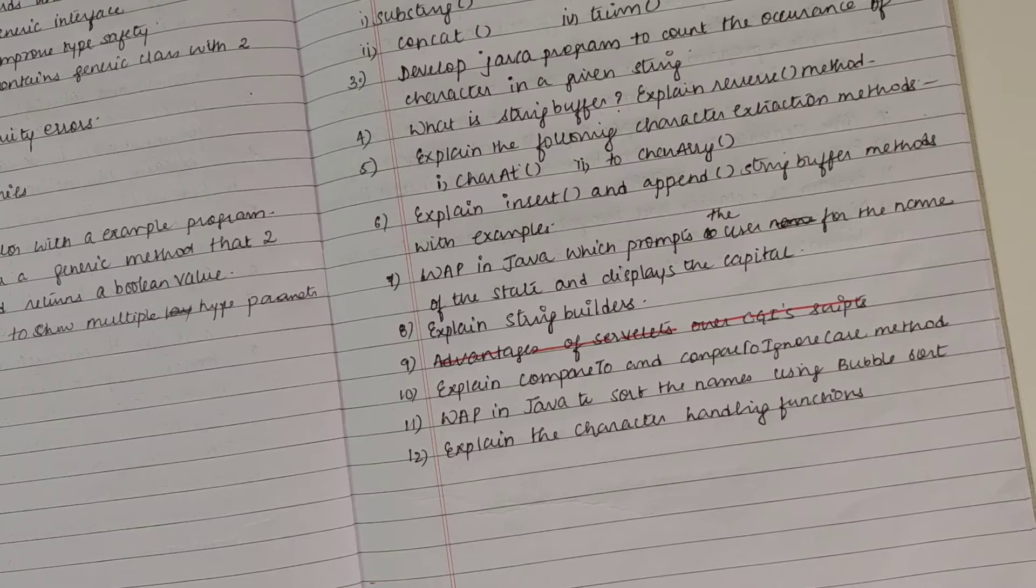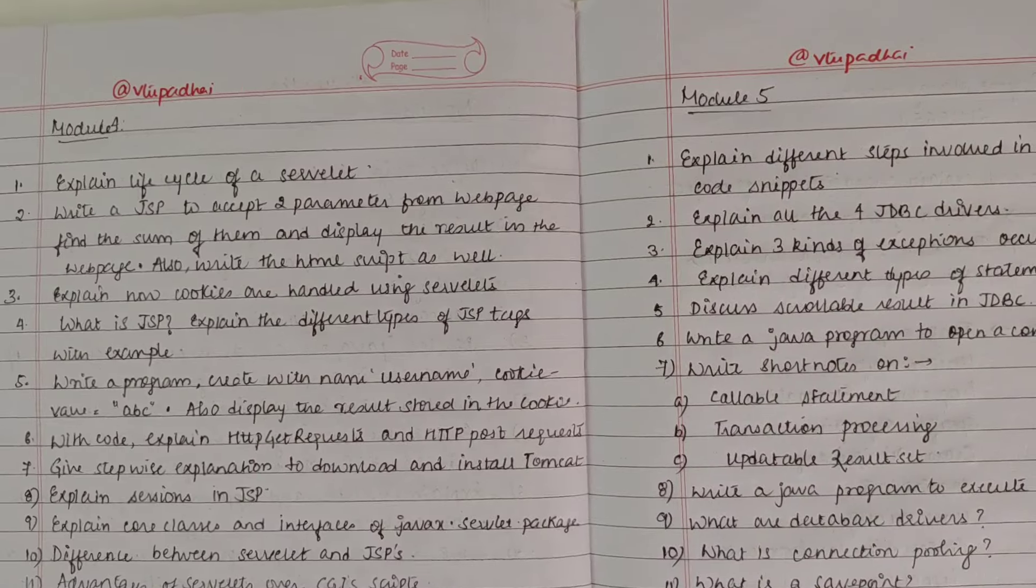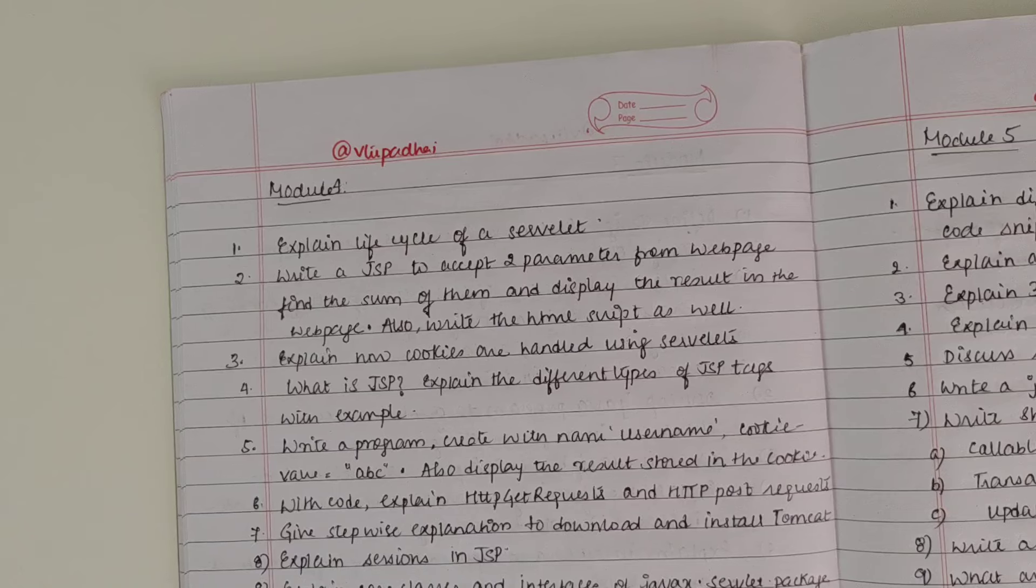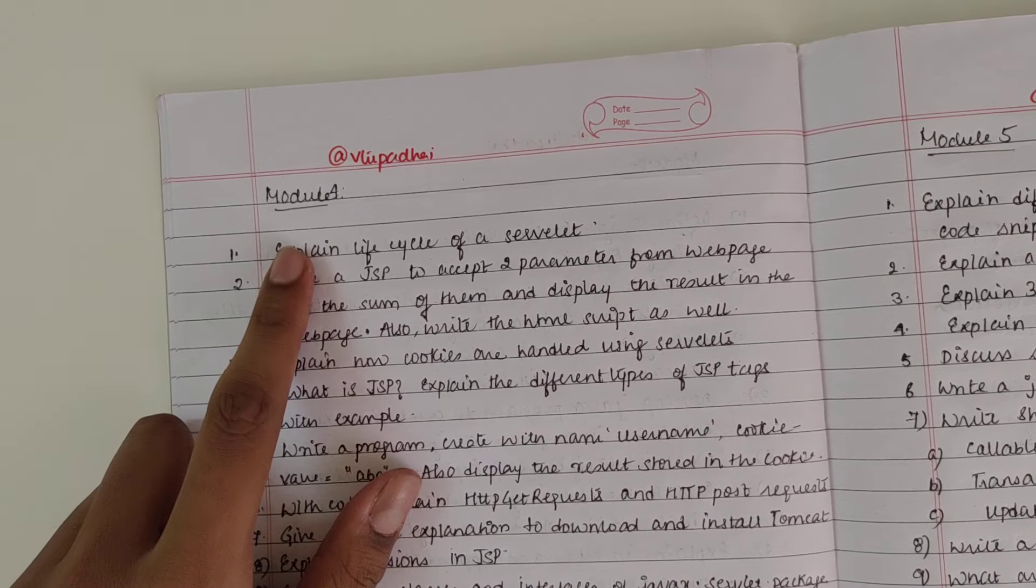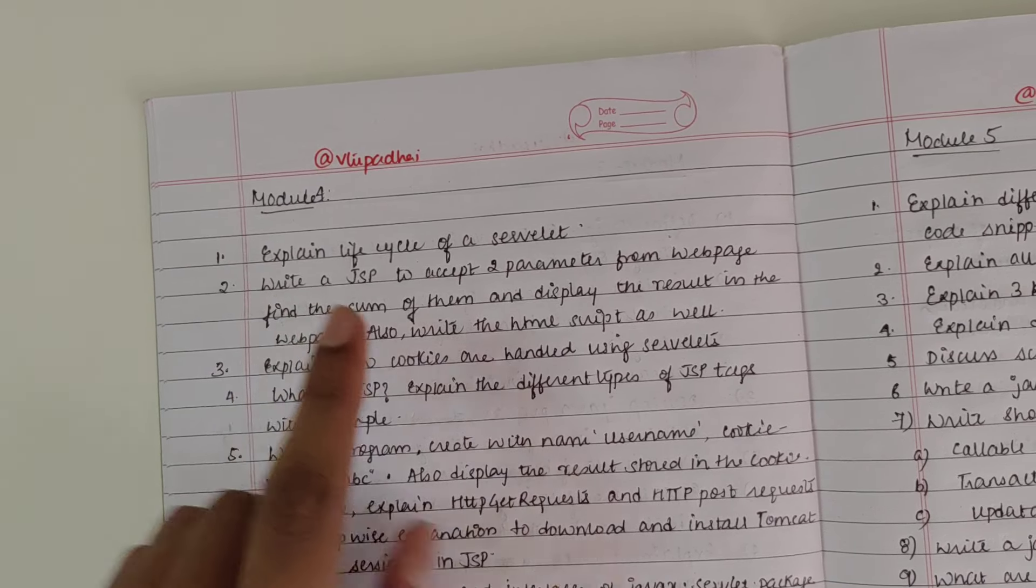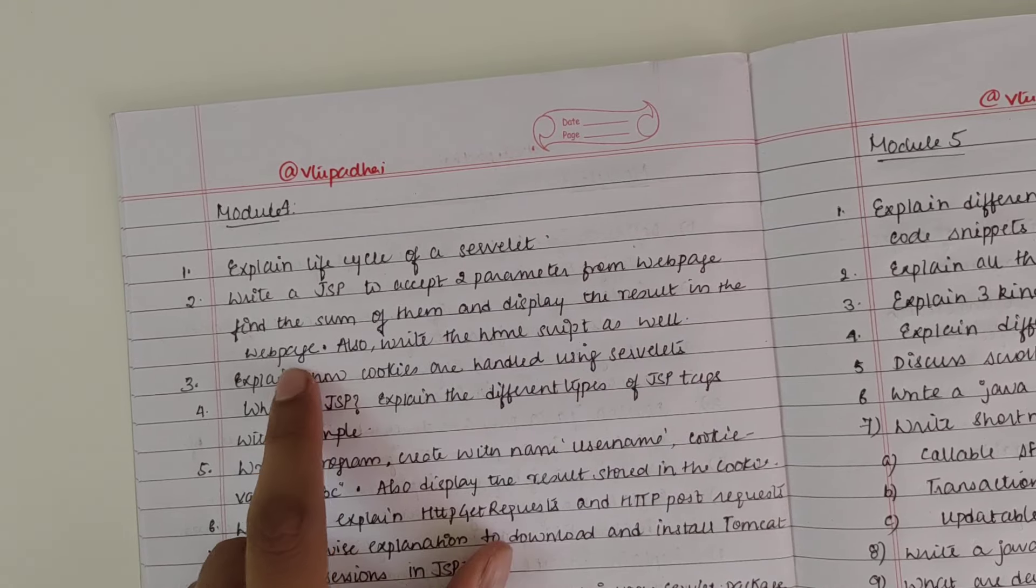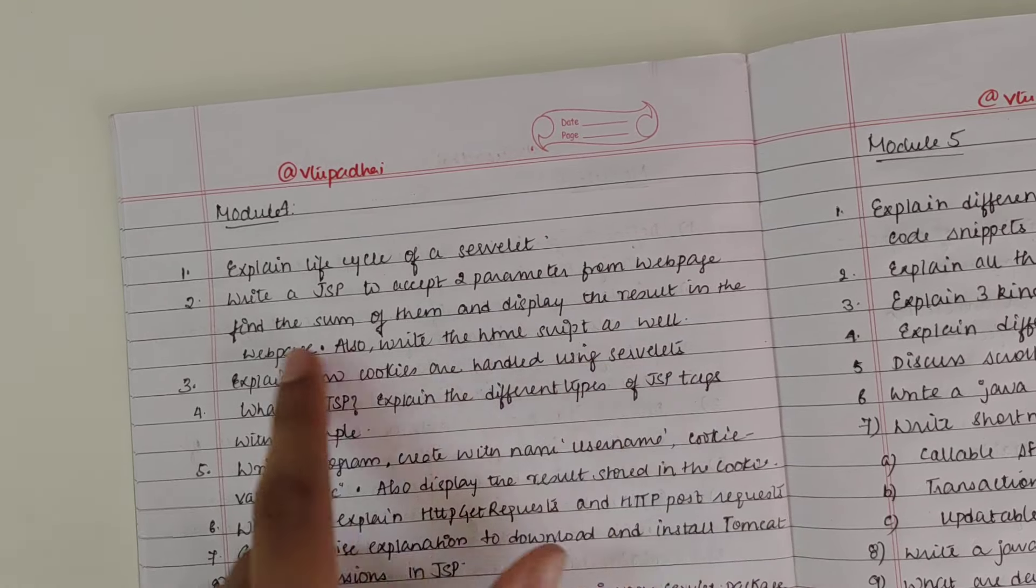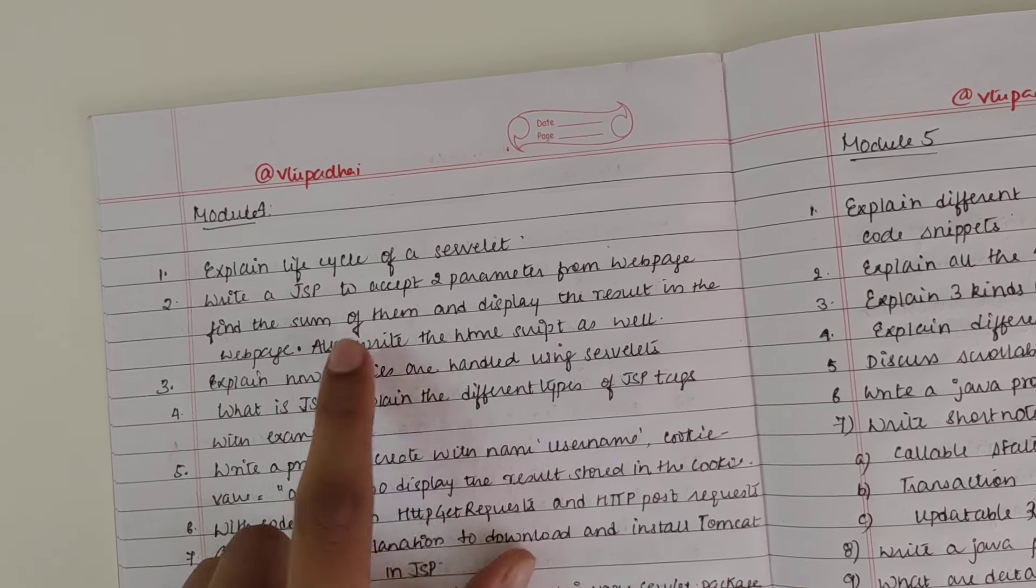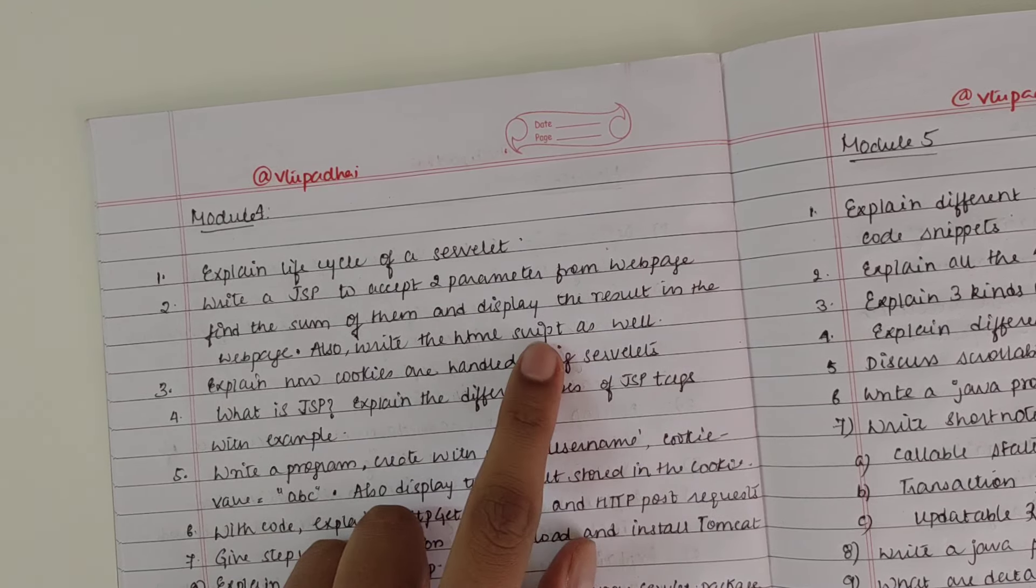Next module is Module 4, which is Servlets. First question: explain life cycle of the servlet. Write a JSP to accept two parameters from a web page, find the sum of them, and display the result in a web page. Also write the HTML script. Read the question properly. For this program we have to write both the JSP Java as well as the HTML file.